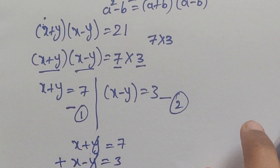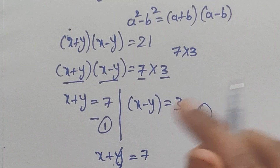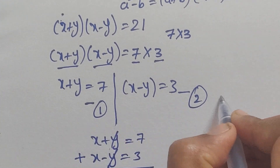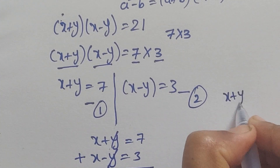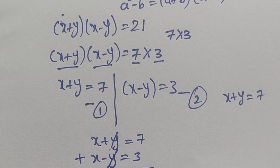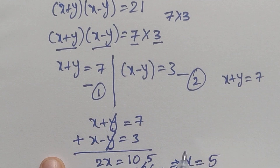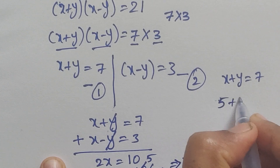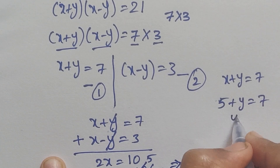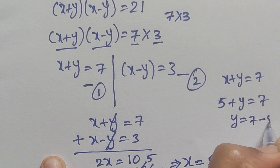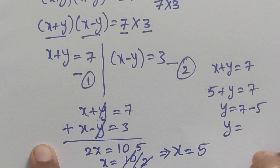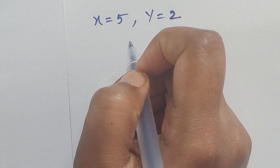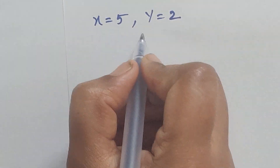Now we need to find the value of y. From equation 1, x plus y equals 7. We know x equals 5, so substituting: 5 plus y equals 7, giving y equals 7 minus 5, so y equals 2.